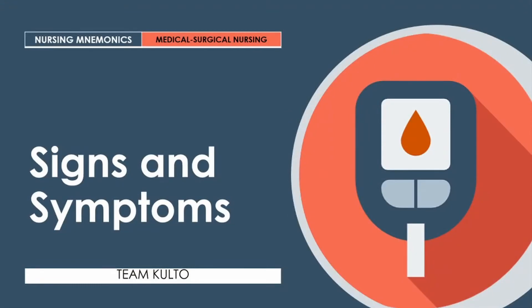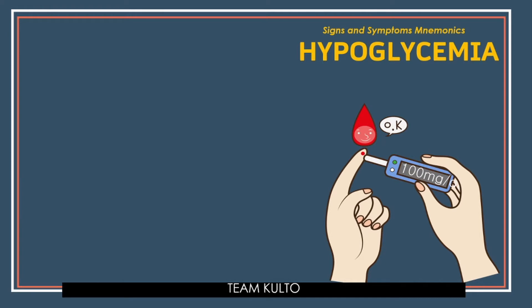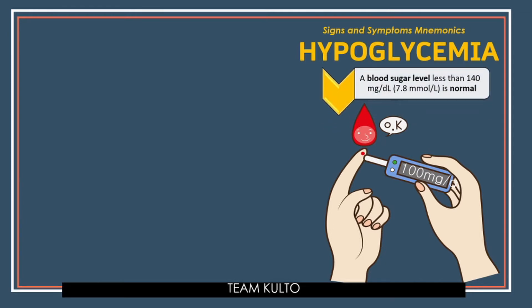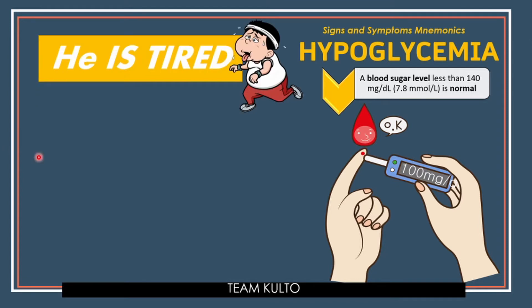Now let's move on to signs and symptoms of hypoglycemia. Before we proceed, I'll link our nursing mnemonics playlist in the icon button or in the description box. To help you remember the clinical manifestations of hypoglycemia, use this mnemonic phrase: 'HE IS TIRED.' Each letter stands for a specific sign or symptom. Keep that phrase in mind — the patient is tired because of hypoglycemia.